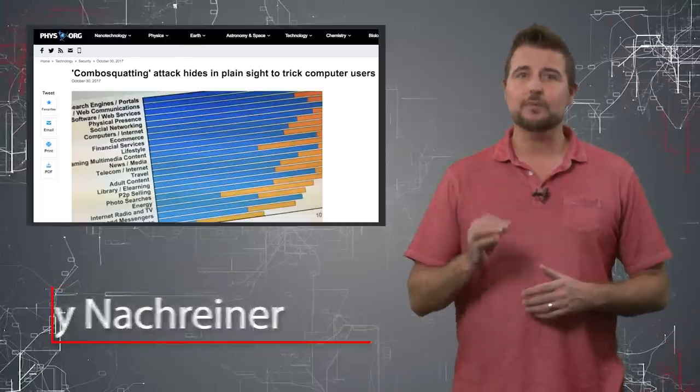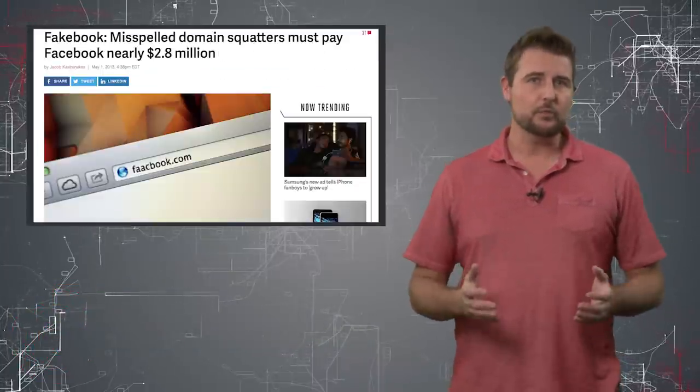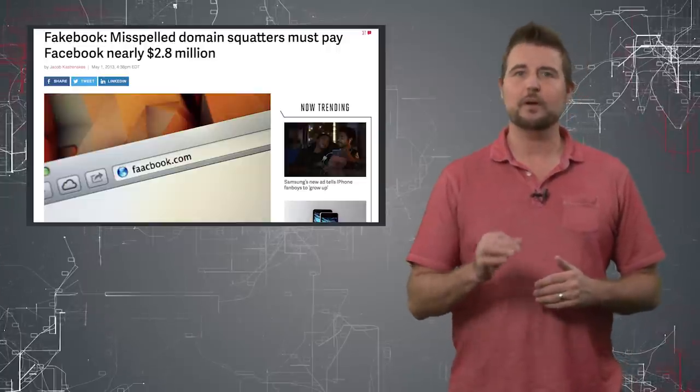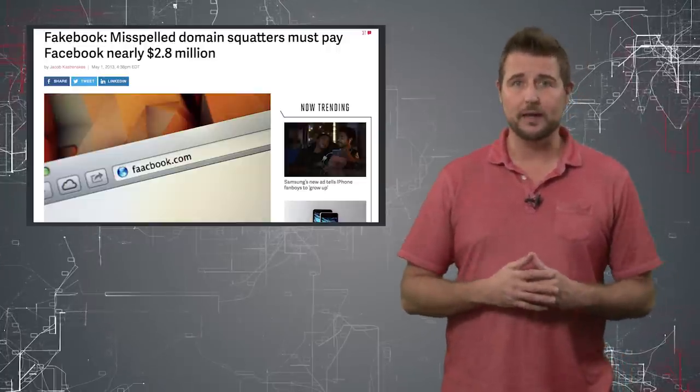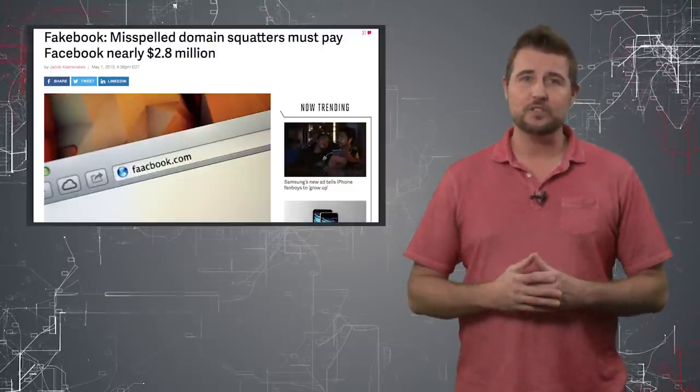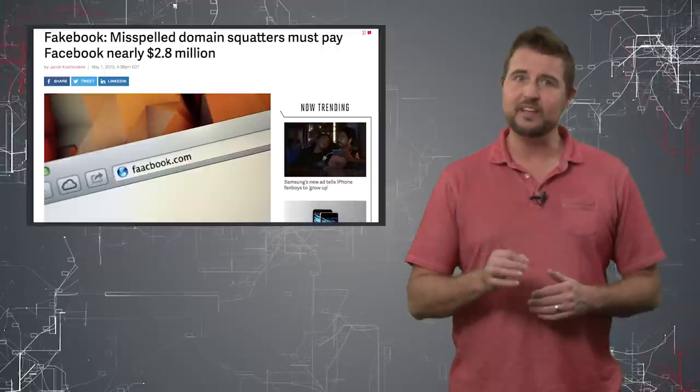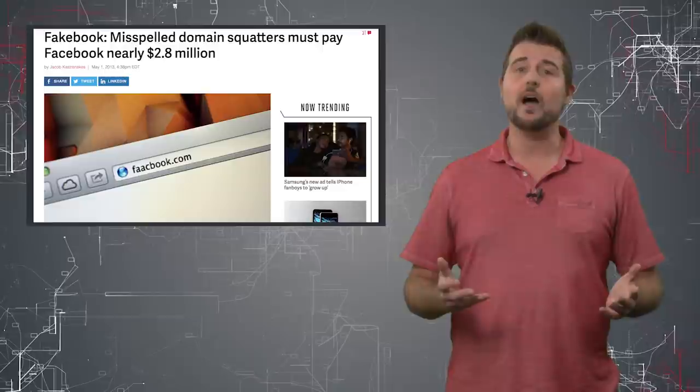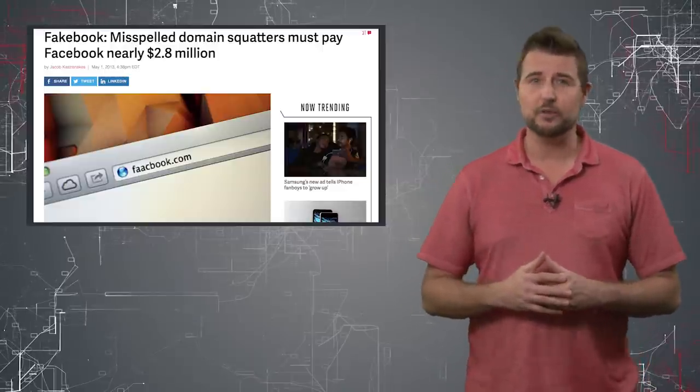You might have heard of the term typo squatting. This is when a malicious actor registers a purposely misspelled version of a popular domain. For instance, take facebook.com. A malicious actor might register favbook with a v.com because the v is close to the c, so it's a common misspelling of facebook.com.